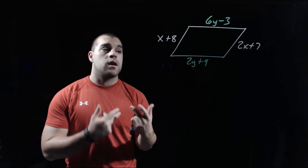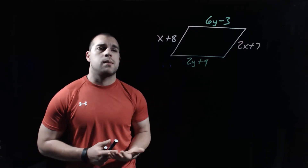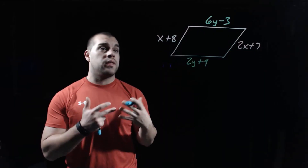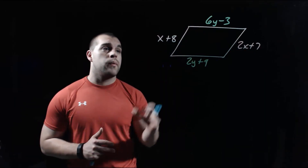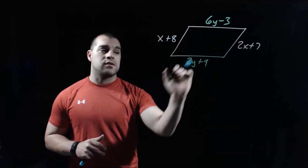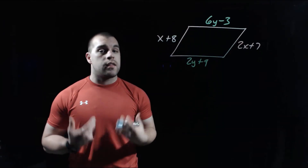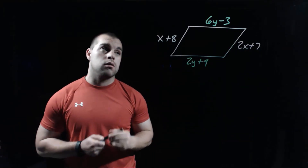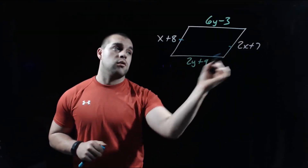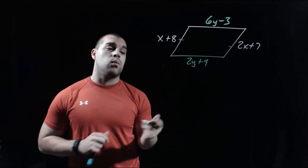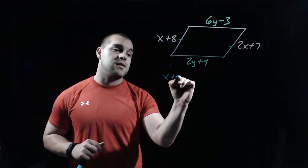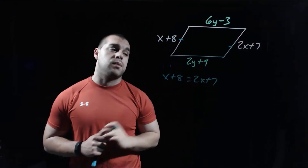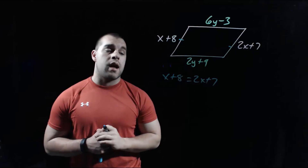Now let's use these properties to solve problems. We've got sides of our parallelogram labeled with different expressions, and we want to solve to find our x value and our y value. The property I'm going to use is that opposite sides of a parallelogram are congruent — this piece on the left is congruent to the piece on the right. We can set them equal to each other: x plus 8 equals 2x plus 7, and now we solve to get x by itself.